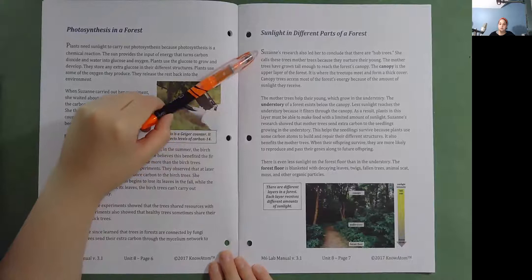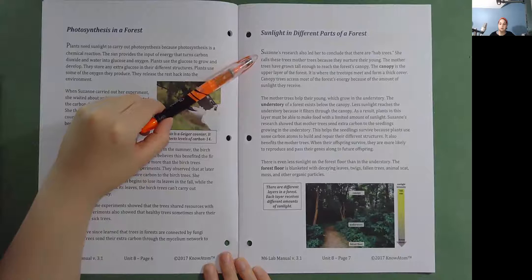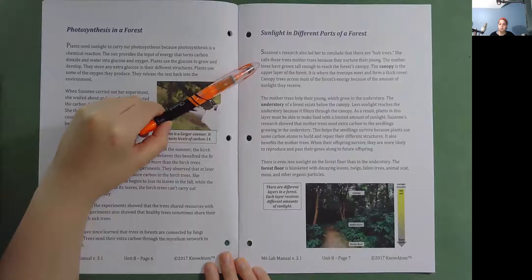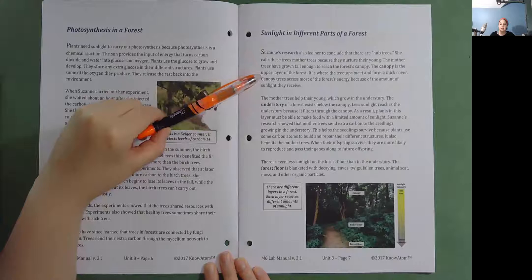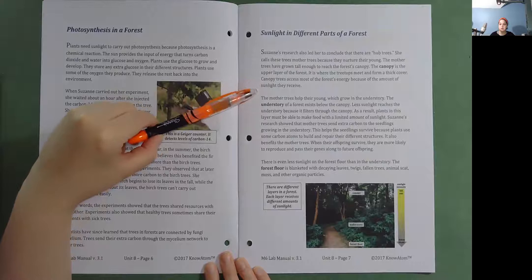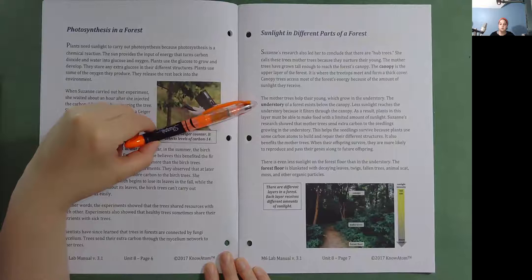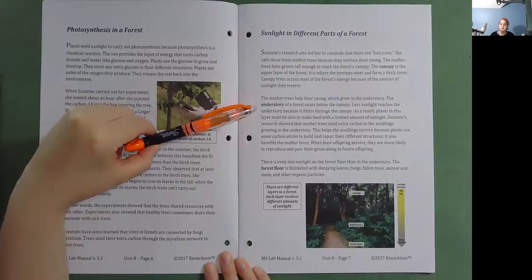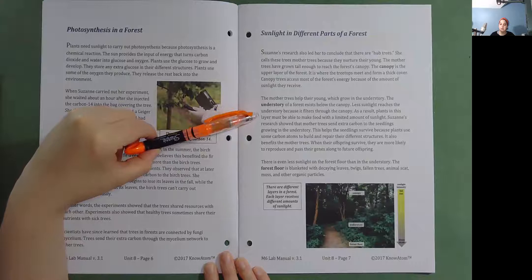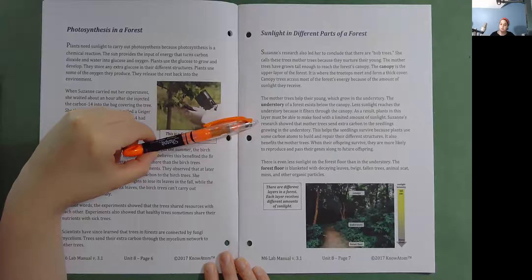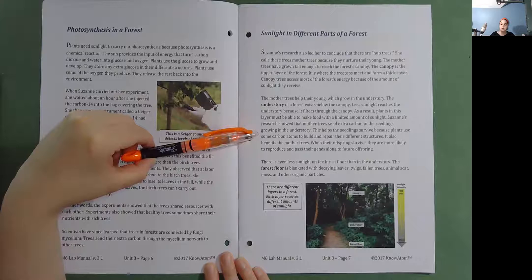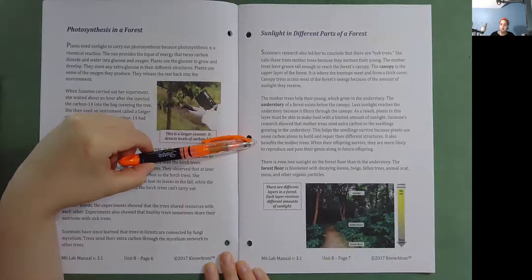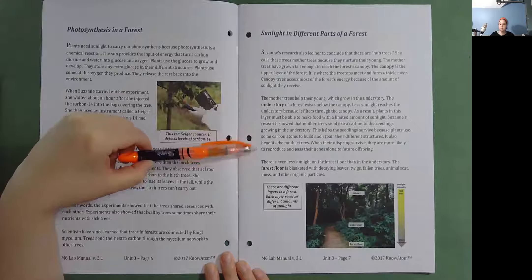Sunlight in different parts of a forest. Suzanne's research also led her to conclude that there are hub trees. She calls these trees mother trees because they nurture their young. The mother trees have grown tall enough to reach the forest canopy. The canopy is the upper layers of the forest. It is where the tree tops meet and form a thick cover. Canopy trees access most of the forest energy because of the amount of sunlight they receive. The mother trees help their young which grow in the understory. The understory of a forest exists below the canopy. Less sunlight reaches the understory because it filters through the canopy. As a result, plants in this layer must be able to make food with a limited amount of sunlight. Suzanne's research showed that mother trees send extra carbon to the seedlings growing in the understory.